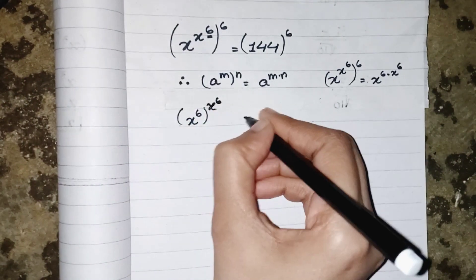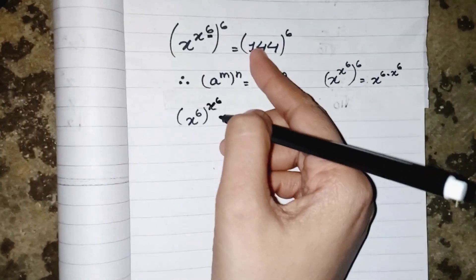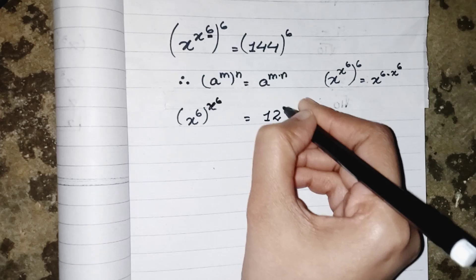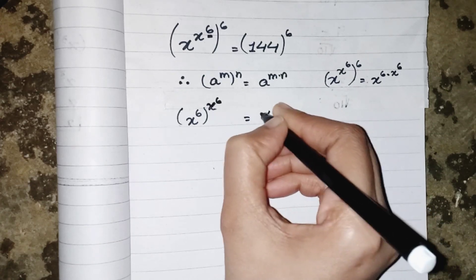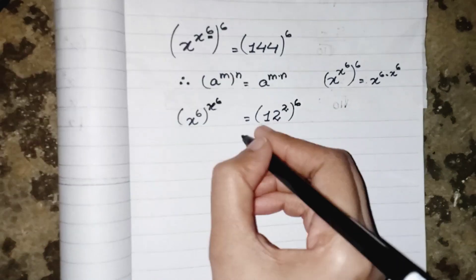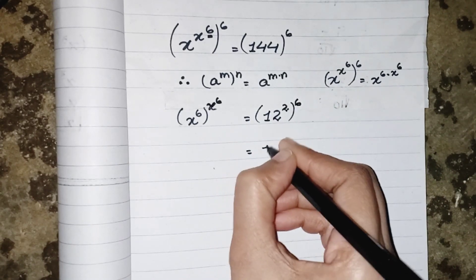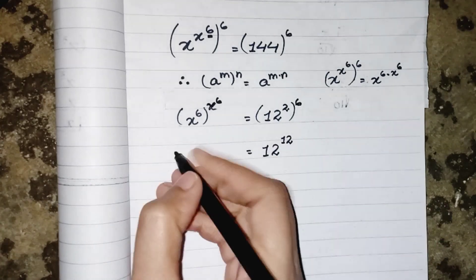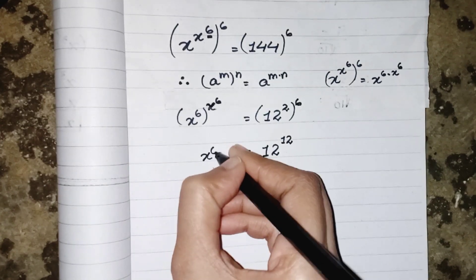Now we have same base and same power, so we can equate them and say x^6 equals to 12. Where we have to find the value of x, so we can say that 6th root of 12, or you can say that x equals to 12^(1/6) is our answer.